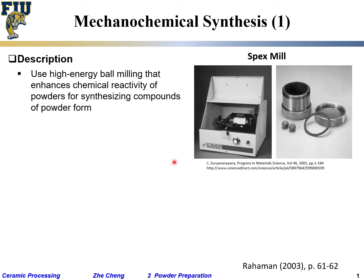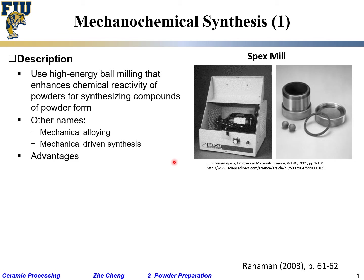That's essentially it — pretty simple, pretty straightforward. No solvent involved, powder in and powder out. The time required depends on the material. Other names for this include mechanical alloying, which means two different metals come together to form an alloy through a mechanical process — you're not melting it.